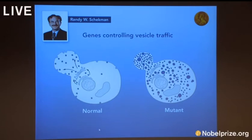This slide depicts vesicle transport in normal yeast cells on the left and in mutant yeast cells on the right. Sheckman identified yeast cells with defective transport machinery. The blue bubble-like vesicles piled up in certain parts of the cell. Sheckman found that the cause of this congestion was genetic, and he went on to identify the genes that mediate specific steps in vesicle transport.